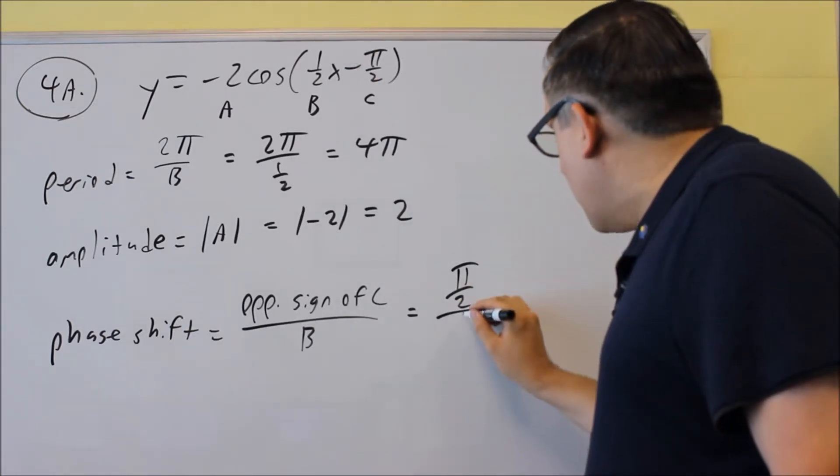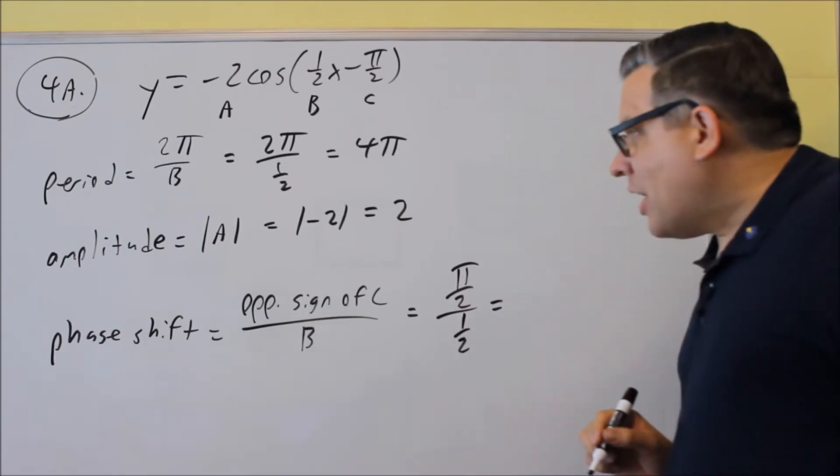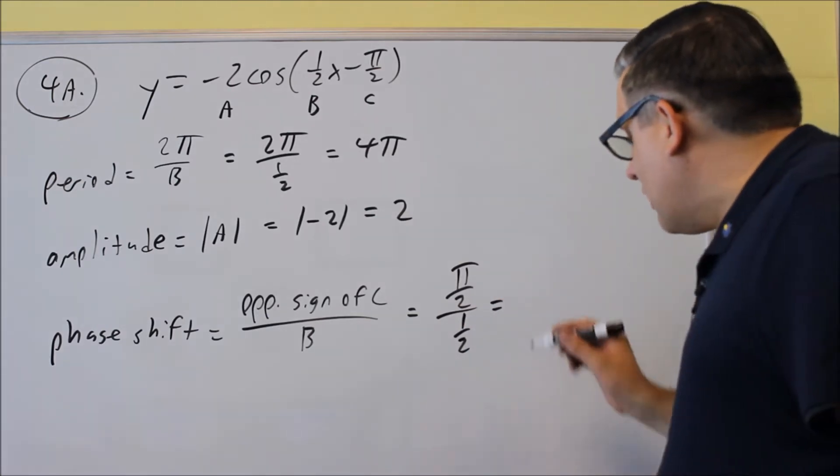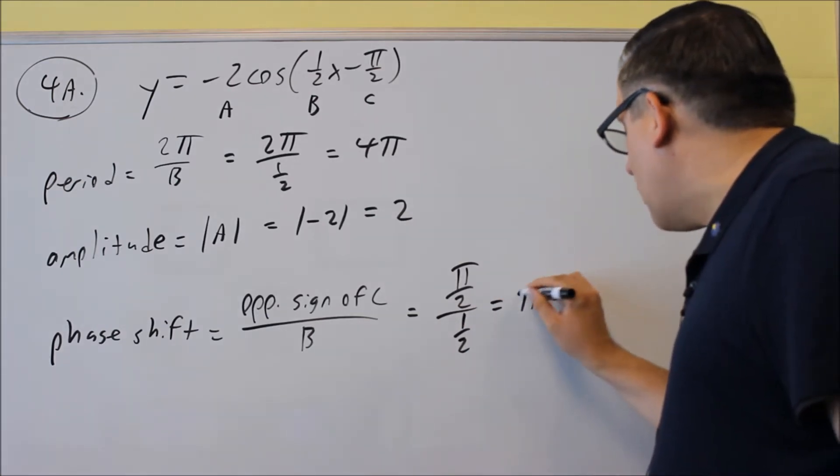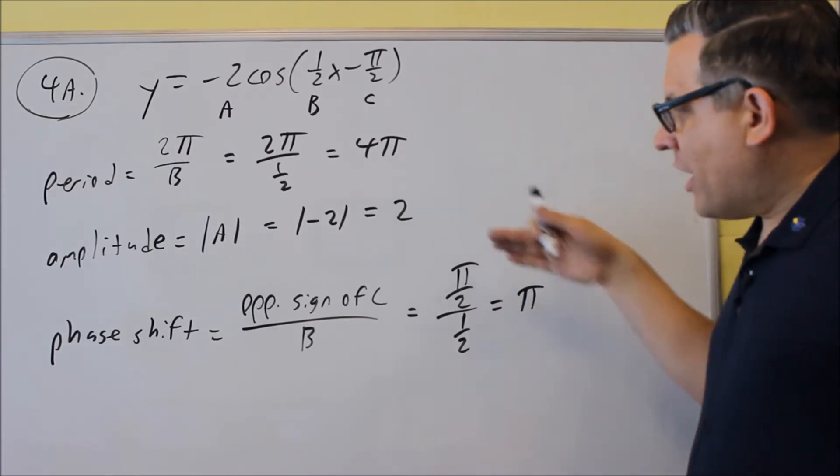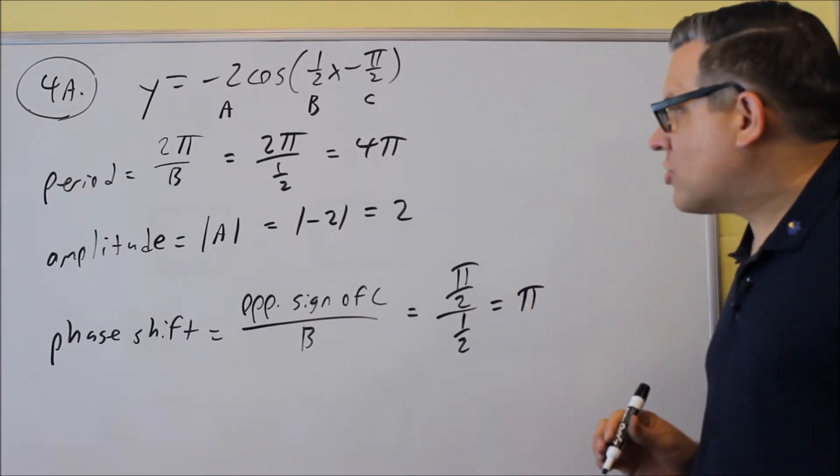Okay, and then we're dividing that by b, which we already said was 1/2. If you were to flip and multiply that one, the 2's would cancel out, and you'd just get π. Okay, so now we have this piece of information here.